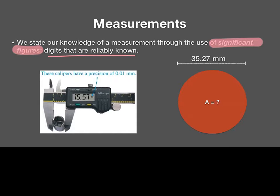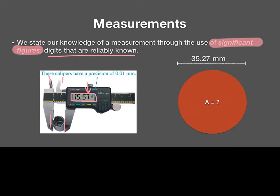Here we have some calipers. You can get outside dimensions, or rearrange it to get inside dimensions — it doesn't matter. The idea is that we have a value given to us. If I were to multiply this value times 0.62491, the idea that this is only accurate to two decimal places does not change, and I have to keep that significance as I go forward. Let's do an example: using these calipers, I find a diameter of 35.27 millimeters.